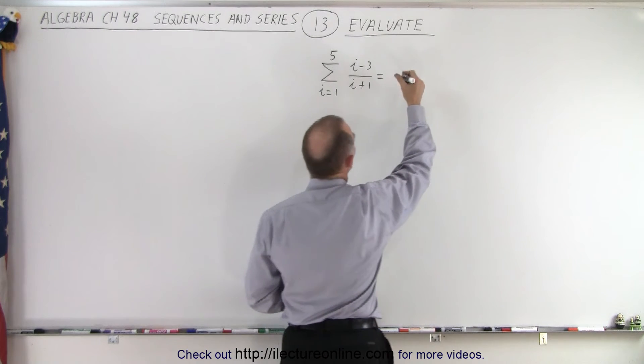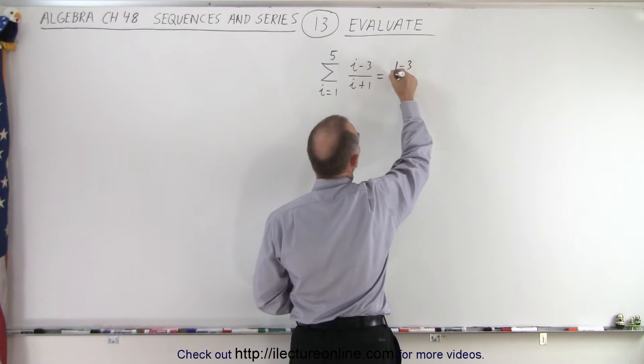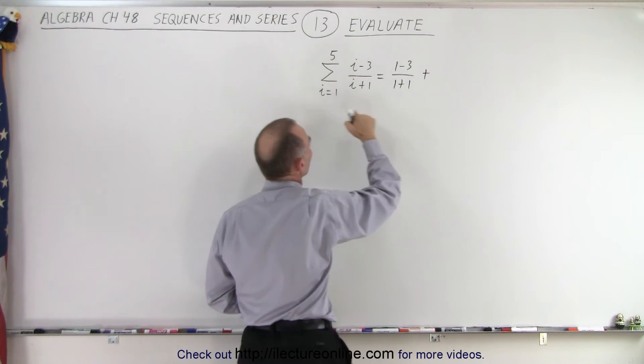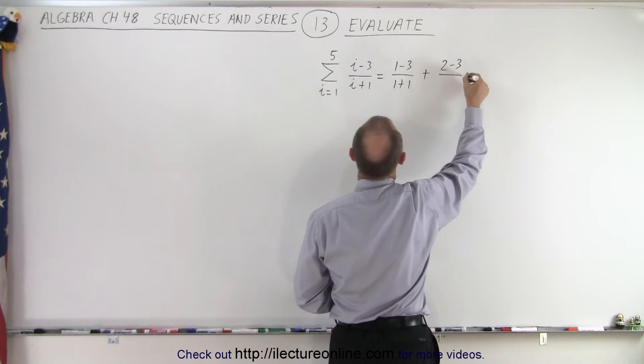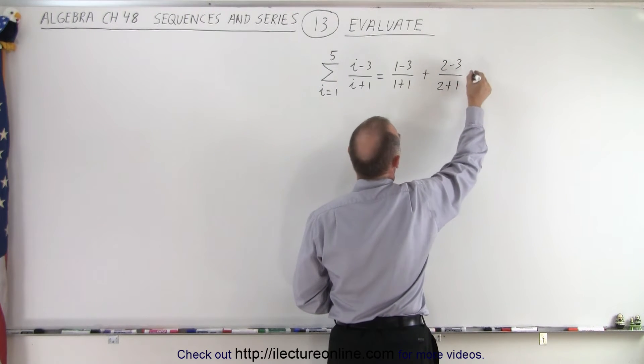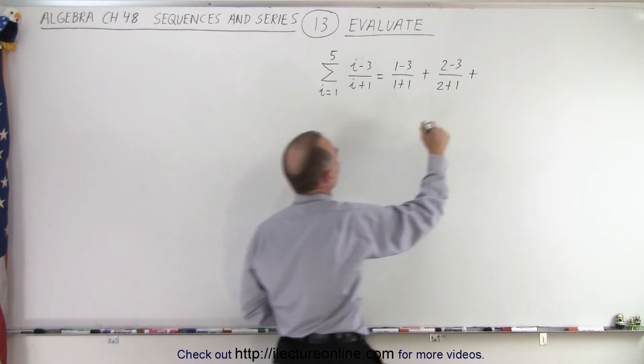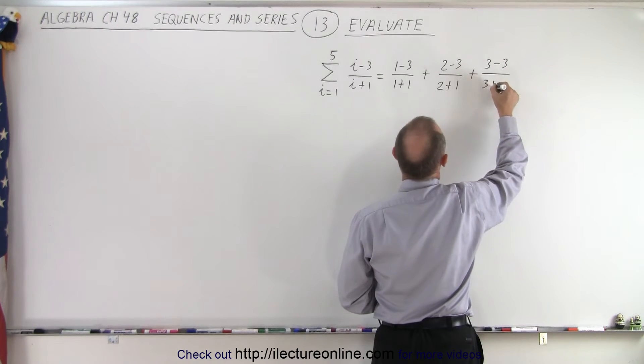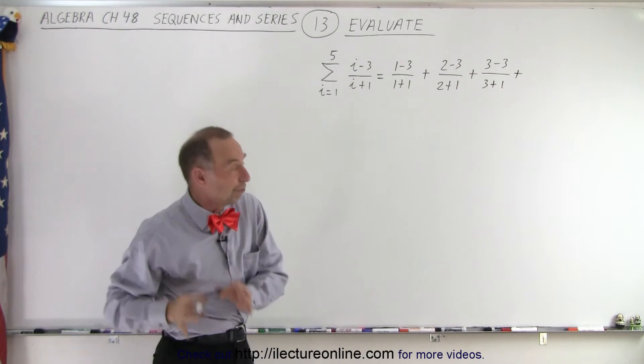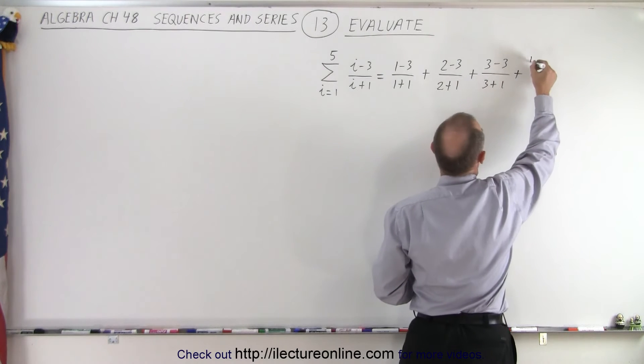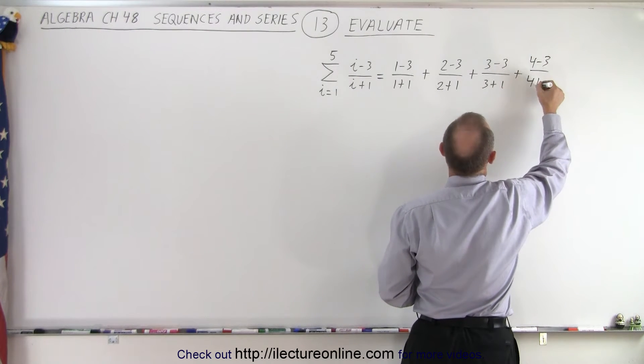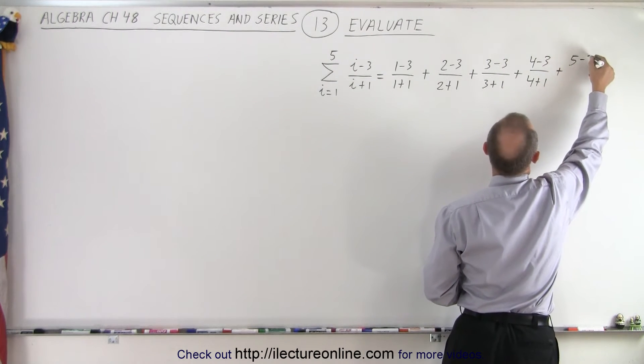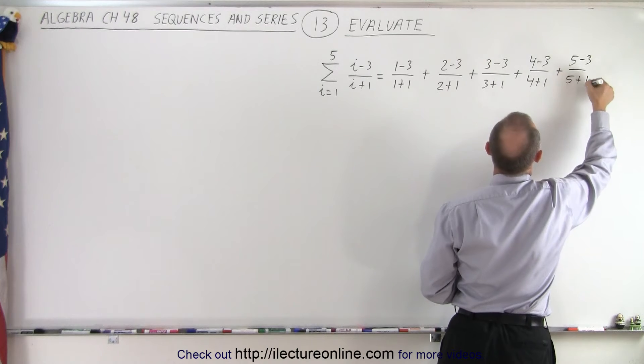First, i is going to be equal to one. So this becomes one minus three divided by one plus one. Plus, now we're going to replace i by two. So we get two minus three divided by two plus one. Plus, now we're going to replace i by three. So we get three minus three divided by three plus one. Plus, now i becomes equal to four. So we end up with four minus three divided by four plus one. Plus, now we replace i by five. And we get five minus three divided by five plus one.